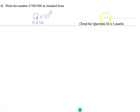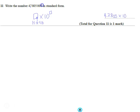So we're going to use the digits 4.7805 times 10 to the power of 1. If the decimal point is going to be here, we really want it to be here. So it's going to go 1, 2, 3, 4, 5, 6, 7 — so times 10 to the power of 7. That's it.